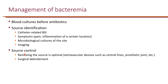Inflammation of a certain location can also be helpful. Microbiological cultures of the site — for example, if someone has a UTI and the urine culture is growing the same organism as in the blood, that could be the source. Similarly, a respiratory sputum culture growing the same organism as the blood could indicate pneumonia as the source. Imaging may also show where the organism is originating from. Source control is crucial — removing the source is optimal, and sometimes surgical debridement may be needed.